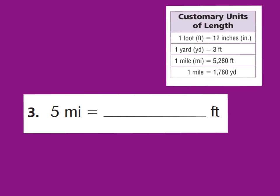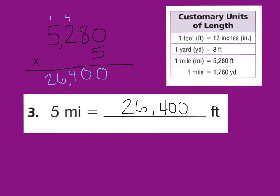Let's take a look at question number three. We're going to look at our chart again. This question says five miles is equal to how many feet? Remember, we're going from a big unit of measurement to smaller ones, so we're going to multiply, because you're going to have more feet than miles. One mile equals 5,280 feet, so if we want to know the value of five miles, we multiply five times 5,280. Did you say five miles equals 26,400 feet? If you did, you are correct.